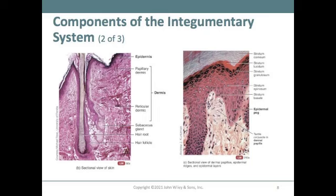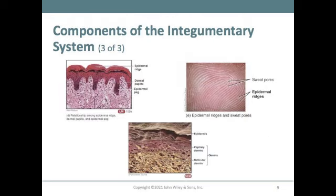These layers are called stratum, or strata. Figure 5.1 continued on page 151 shows more micrographs at 100× magnification, illustrating the relationship among the epidermal ridge, the dermal papilla, and the epidermal peg. There is also a close-up image of a fingerprint showing the sweat pores and epidermal ridges.